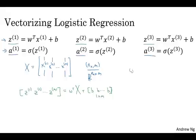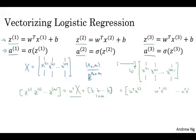So, depending on how familiar you are with matrix multiplication, you might see that w transpose, x^(1), x^(2), and so on, through x^(m), that w transpose is going to be a row vector, right? So w transpose will be a row vector like that. And so, this first term will evaluate to w transpose x^(1), w transpose x^(2), and so on, w transpose x^(m).